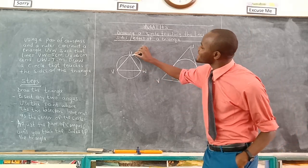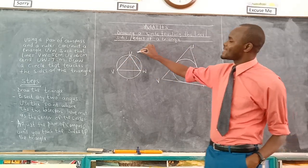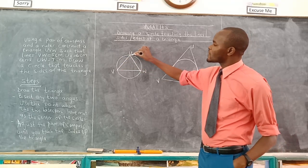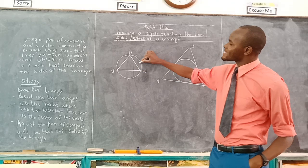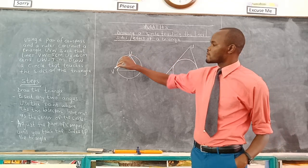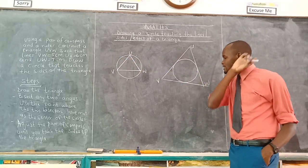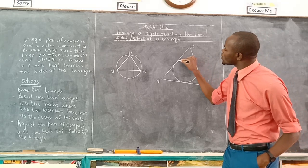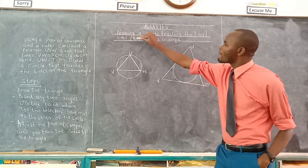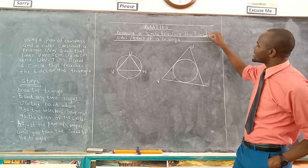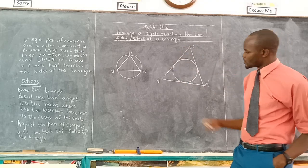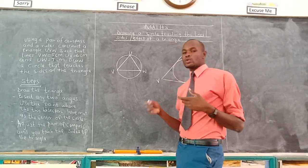The first one is a circle touching the three sides of the triangle. Then we have the circle touching the three vertices — points O, U, W, B. On the other hand, we have a circle which is drawn inside the triangle, touching the sides, edges, or lines of the triangle. These are the sides or lines or edges. What is the difference when it comes to constructing?